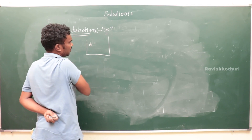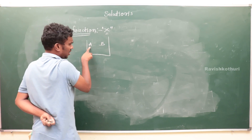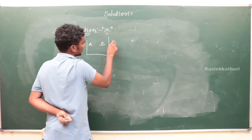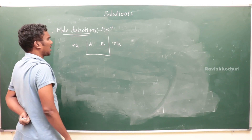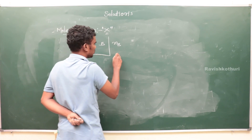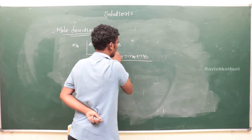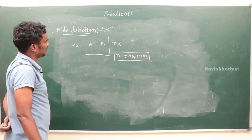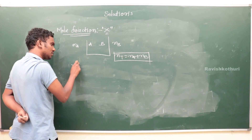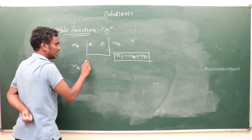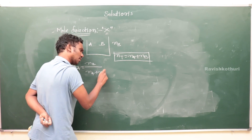In a binary solution with component A (nₐ moles) and component B (n_b moles): total number of moles = nₐ + n_b. Mole fraction of A: x_a = nₐ / (nₐ + n_b).